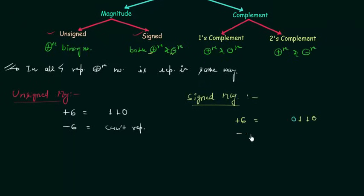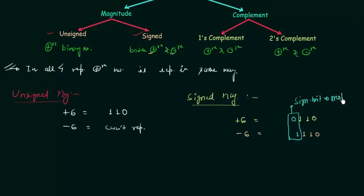For example, if I want to represent minus 6, I will represent the magnitude first: 1 1 0, and then add 1 as the MSB. So the sign bits 0 and 1 are the MSB of the number, and 1 1 0 is the magnitude. In signed magnitude representation we have two parts: the sign bit, which decides whether the number is positive or negative, and the magnitude of the number.